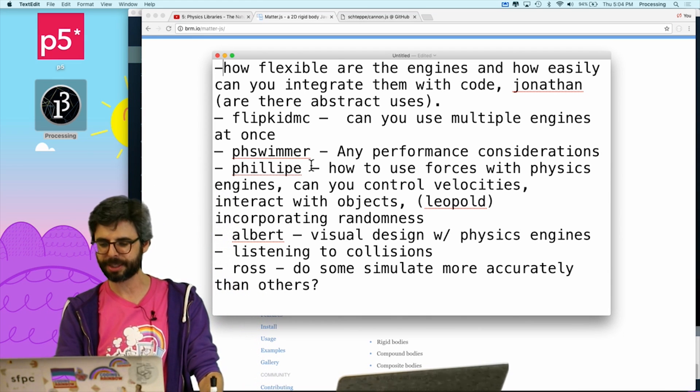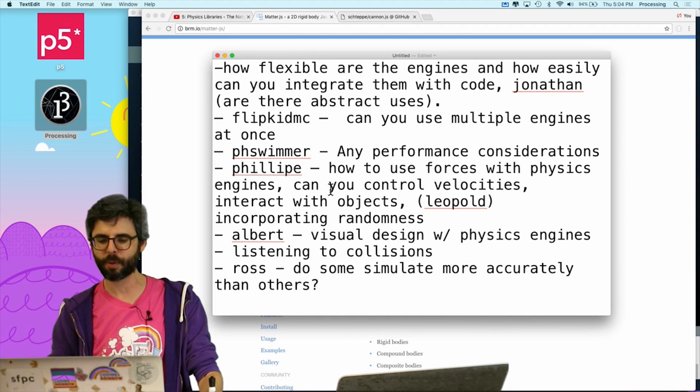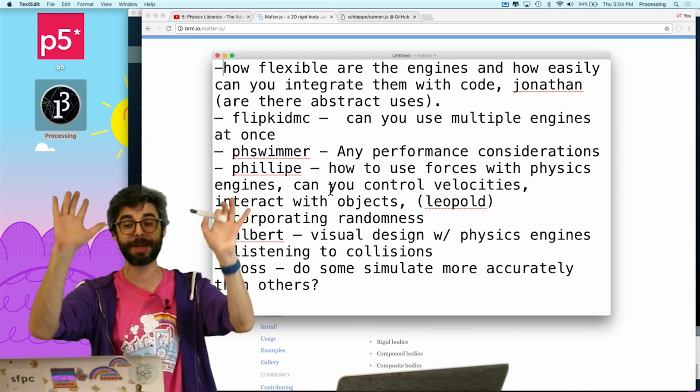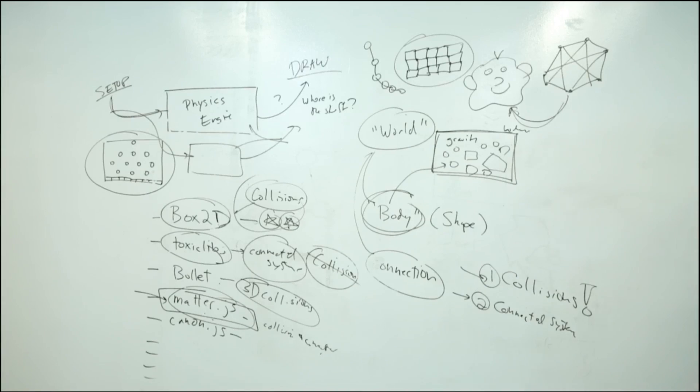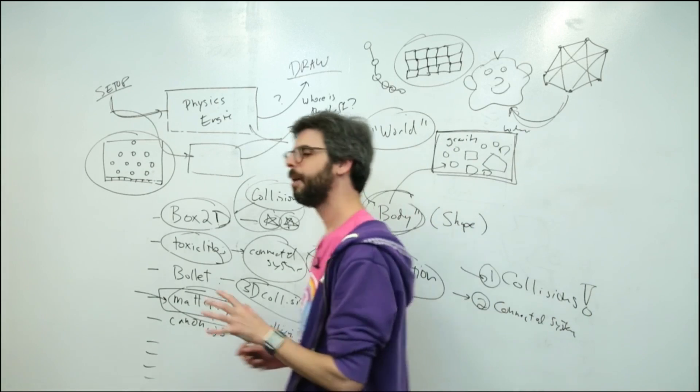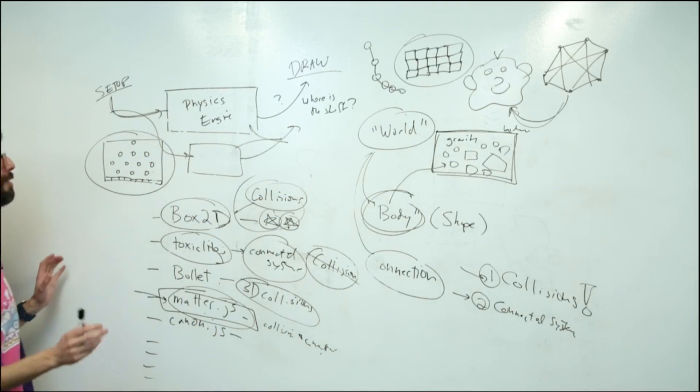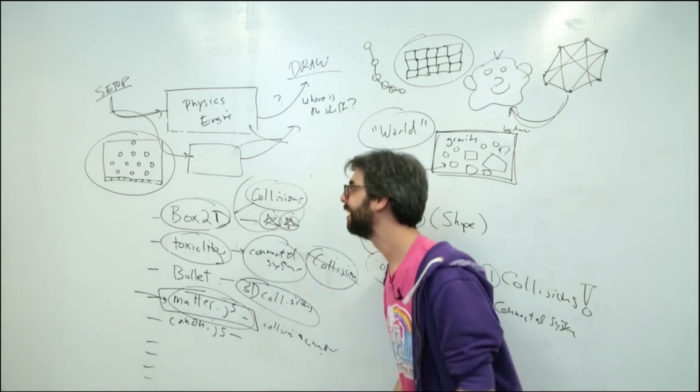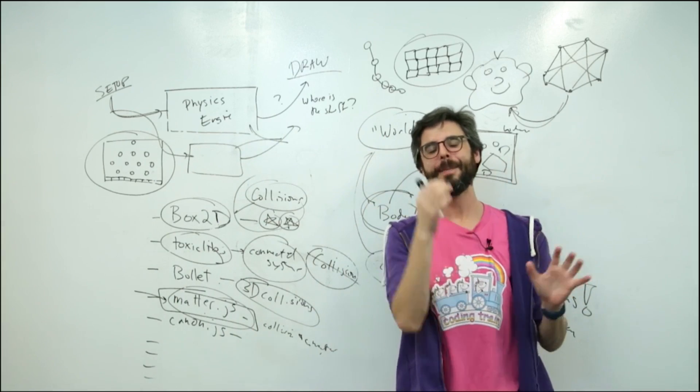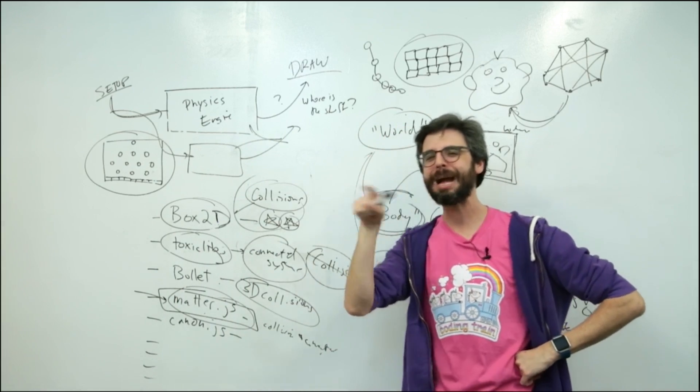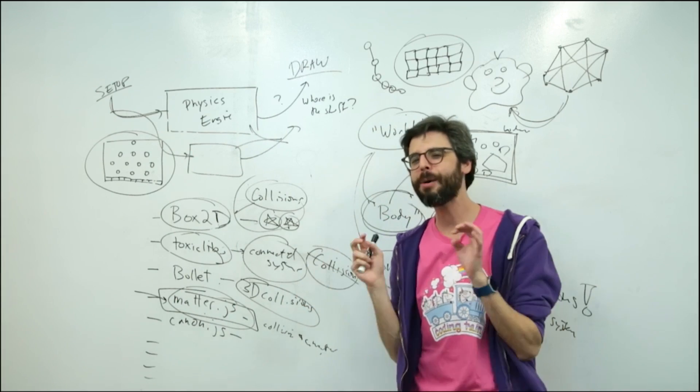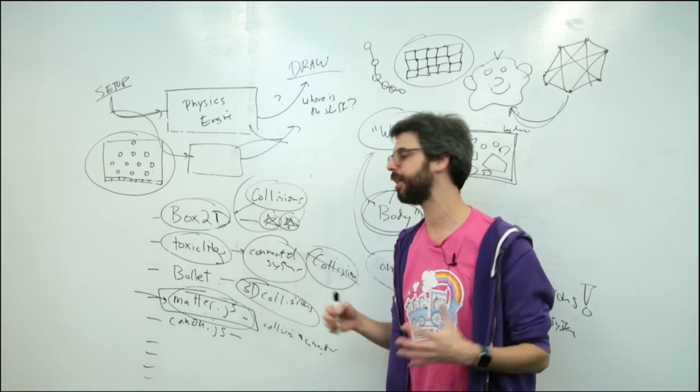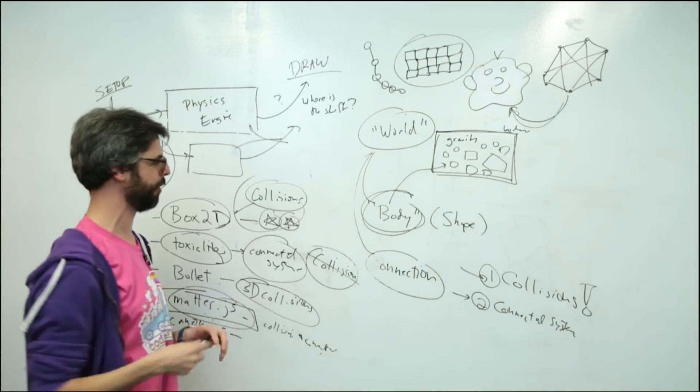And can you, okay, another question here is from Philippe. How to use, this is, I reworded this question, but how to use forces with physics engine and can you control velocity? This is a big question, which I will cover and look at in a lot of my examples. But the question really is, I kind of set you up in this way of, like, hey, let's put stuff in the world. It's in the world. Now, let's go over here. Let's read where the stuff is and let's draw it to the screen. But what if the thing that's in the world, I want to control how it's moving or I want to add a force into the world that's going to affect the way that the world is behaving?